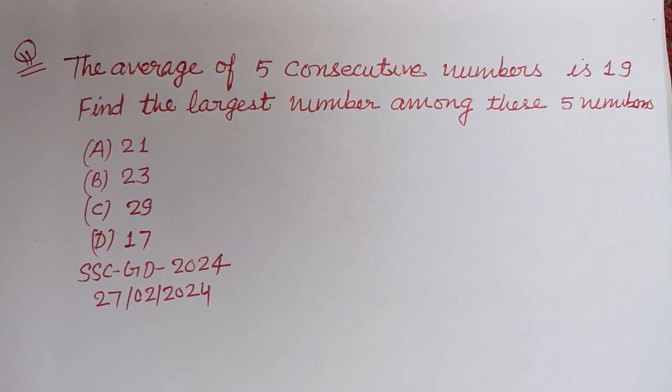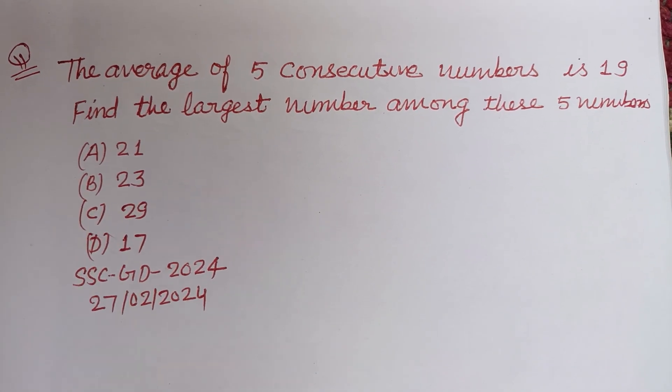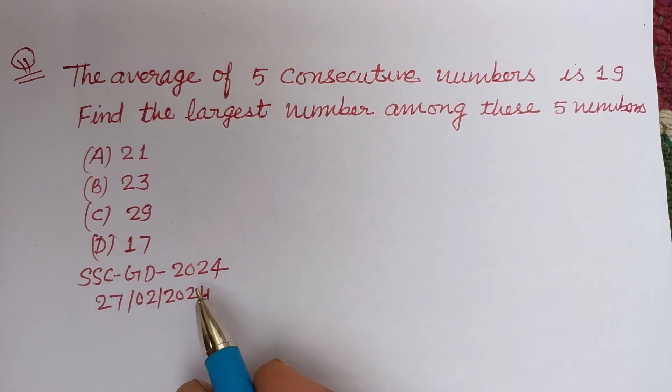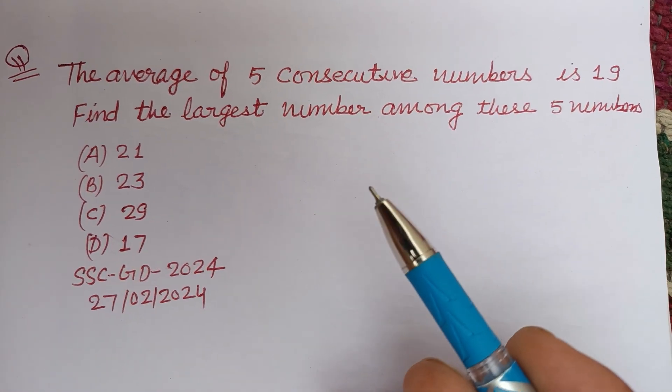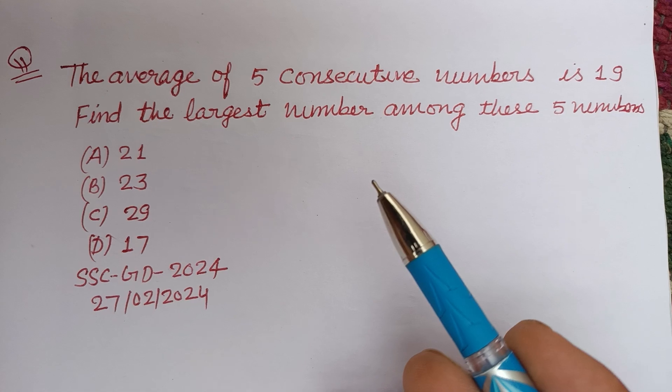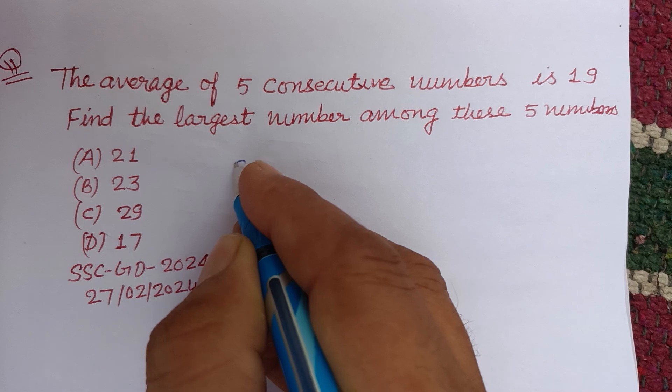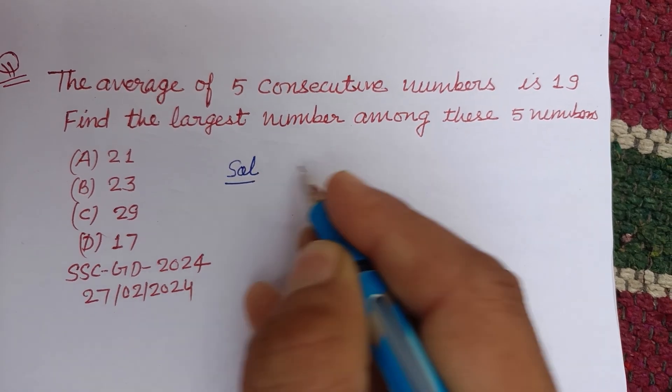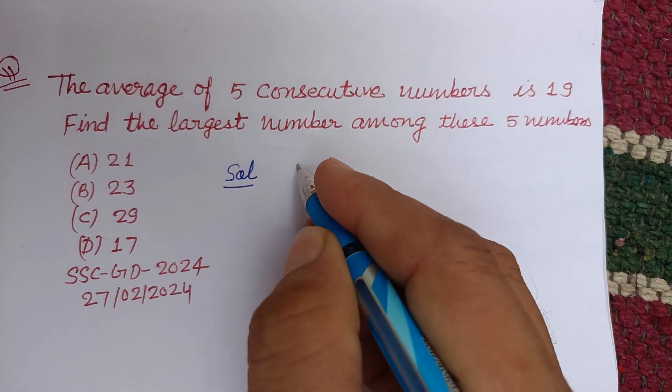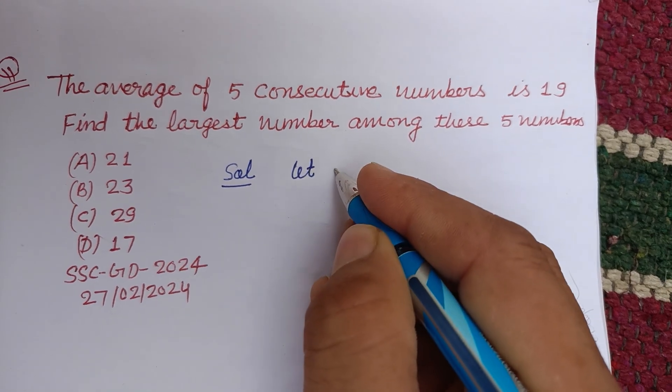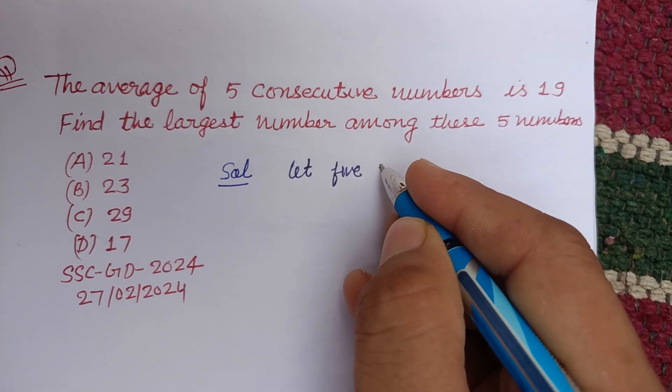Hello viewers, warm welcome to this YouTube channel. Question from SSC GD 2024: The average of five consecutive numbers is 19. Find the largest number among these five numbers. So students, let five consecutive numbers be...